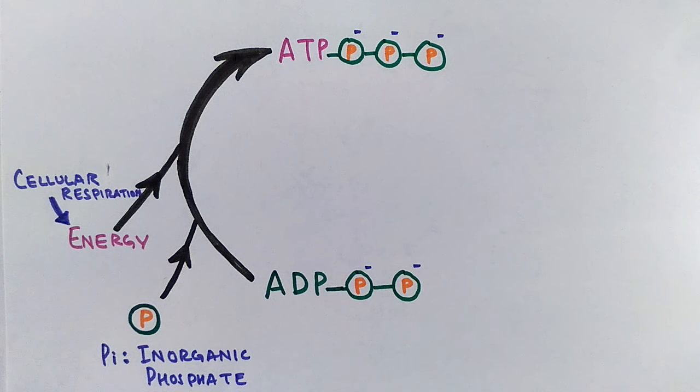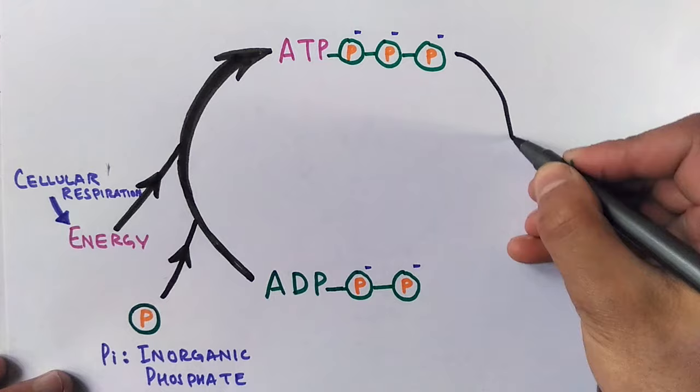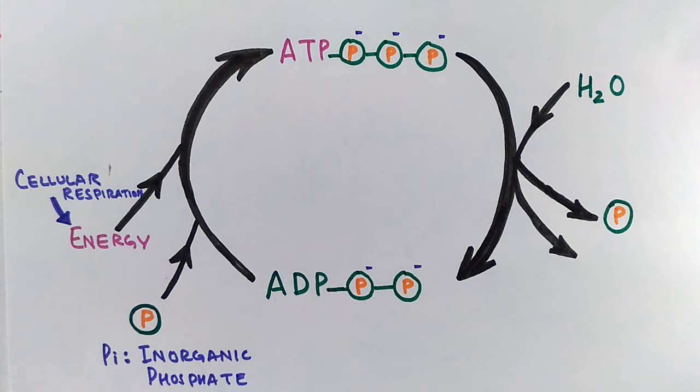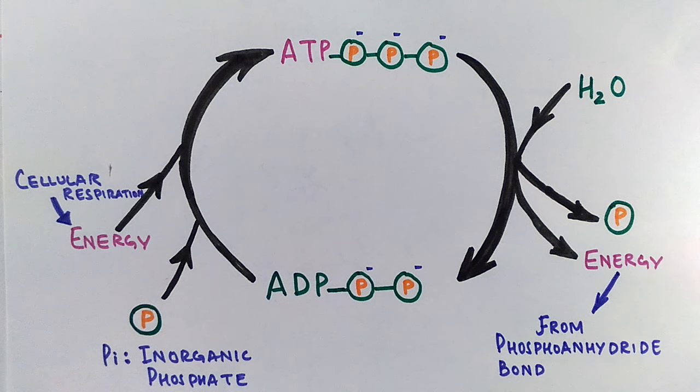So here the last phosphate, the unstable phosphate, gets released from this ATP and it's transformed into ADP again. And this reaction is aided by water—that is, there is hydrolysis of ATP molecule. And from this we get the inorganic phosphate back, and there is a release of immense energy because the phosphoanhydride bond is broken here, which has got a lot of energy in it.